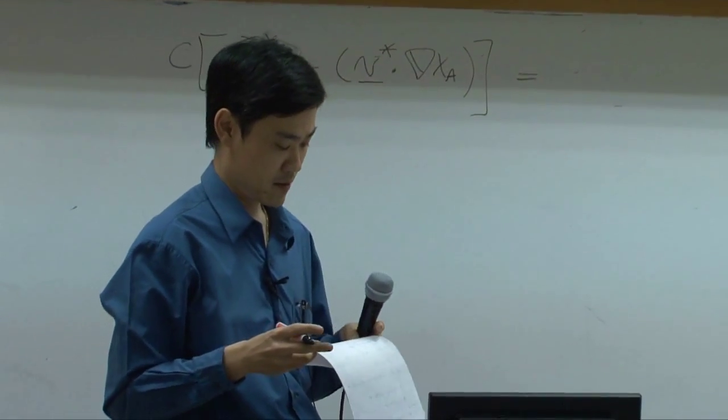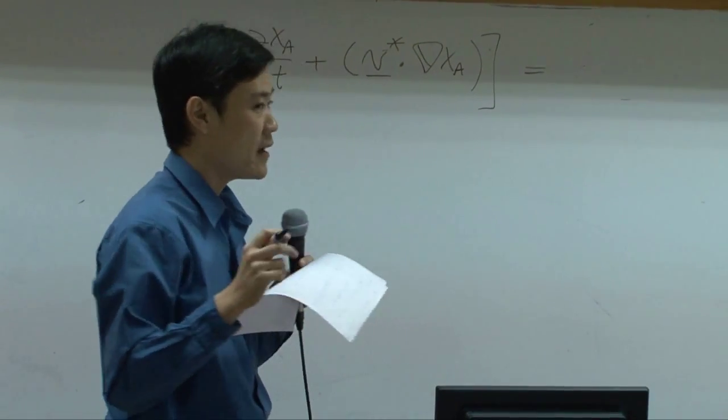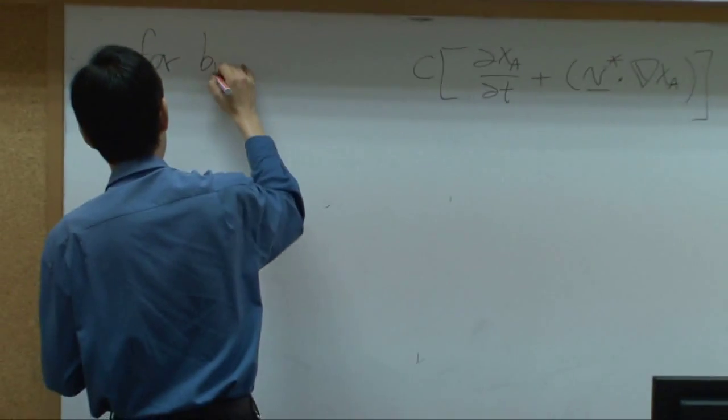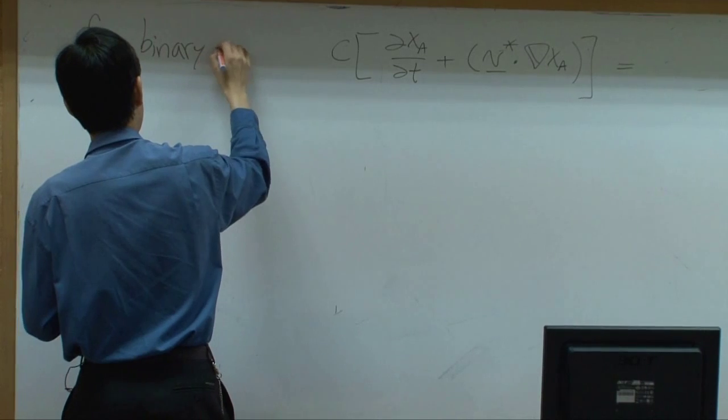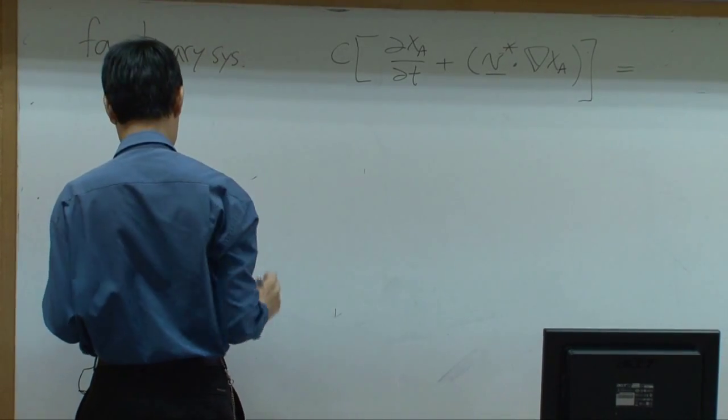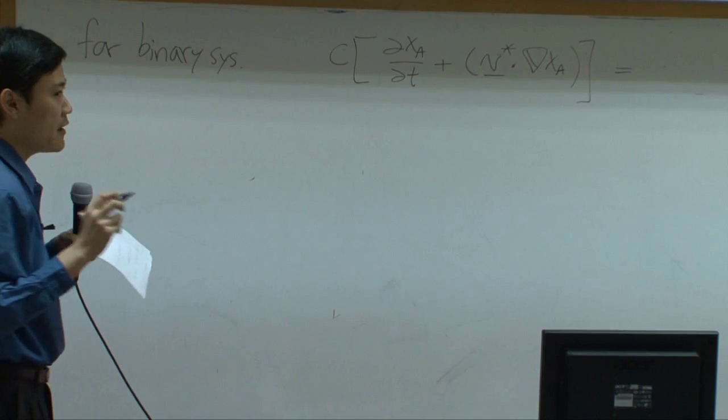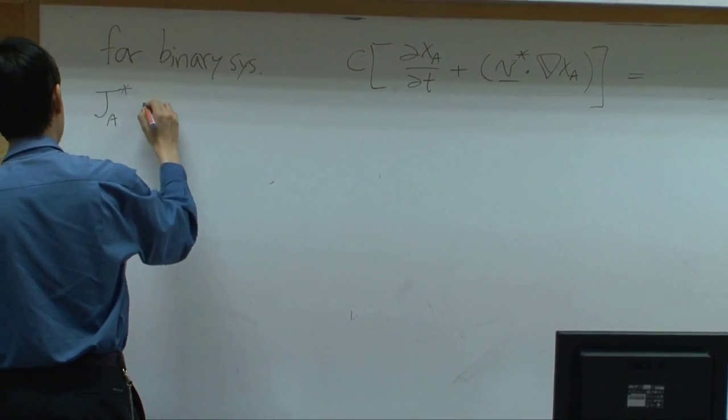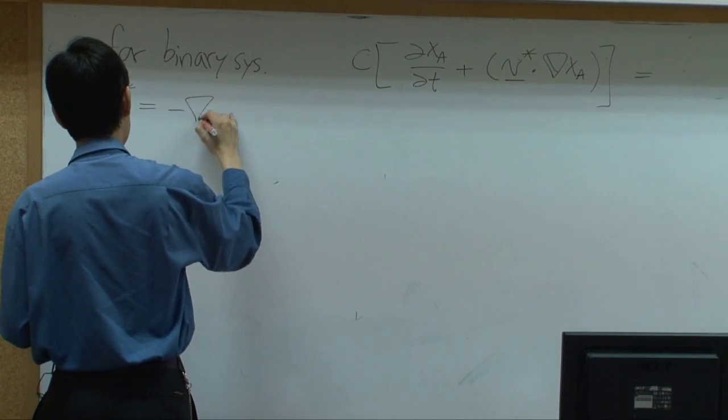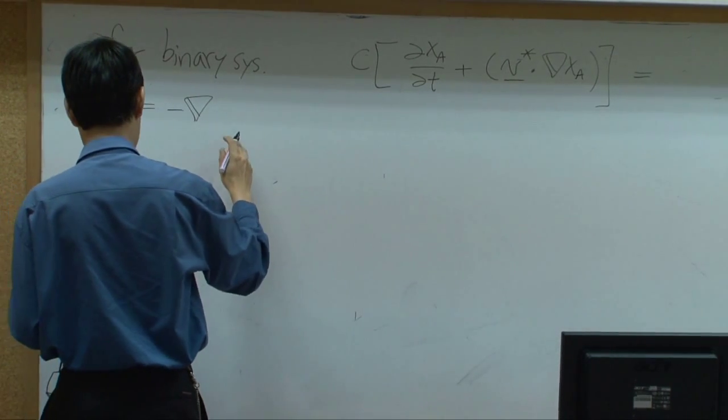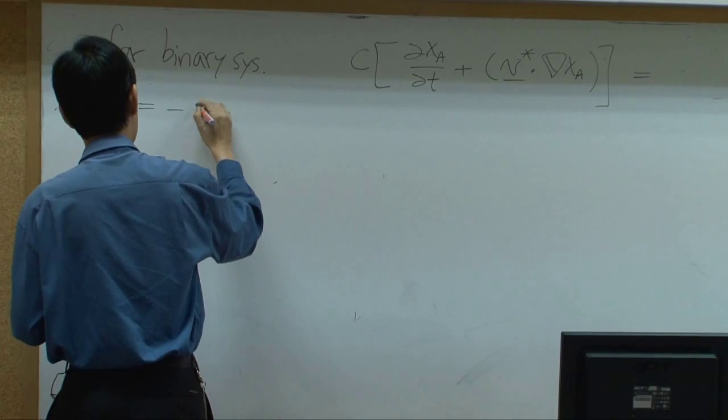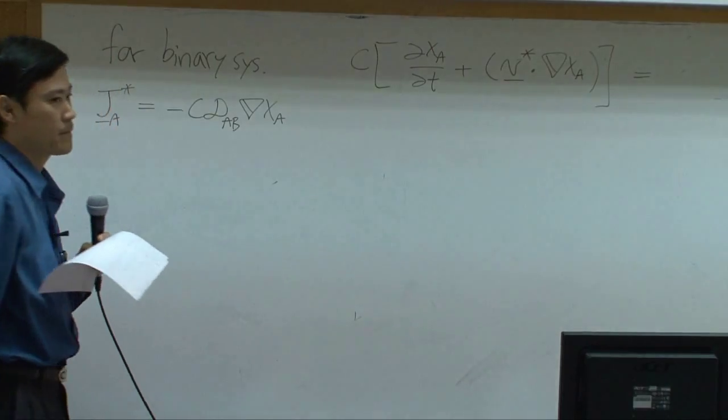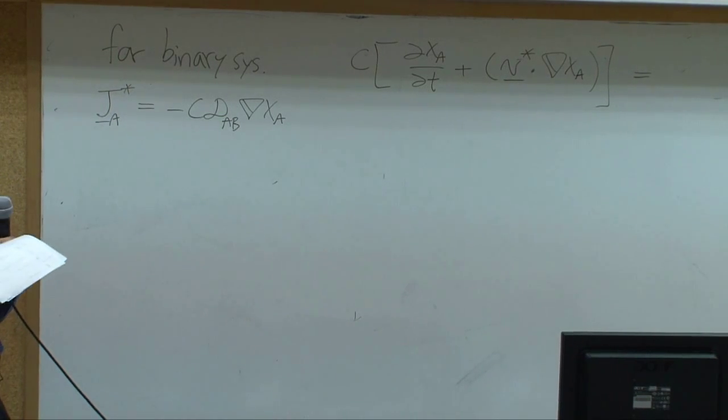On the right, if your system is binary, for binary system, therefore jA star should equal to minus del cdab del xa. We can use Fick's law for binary system.